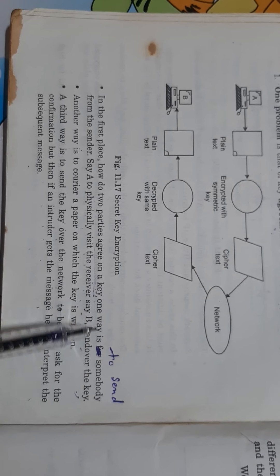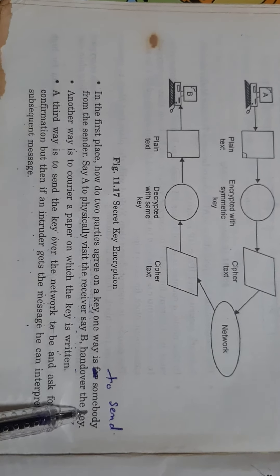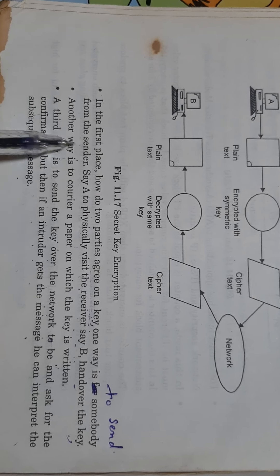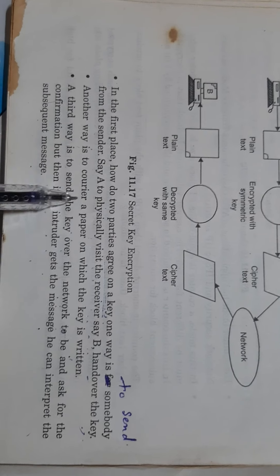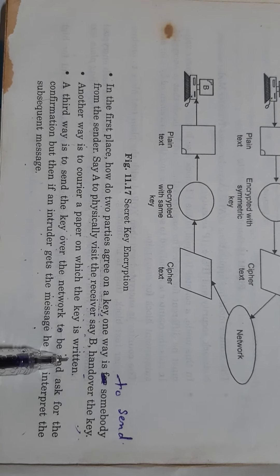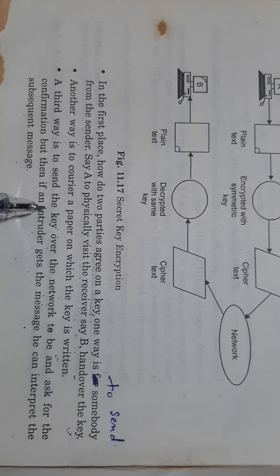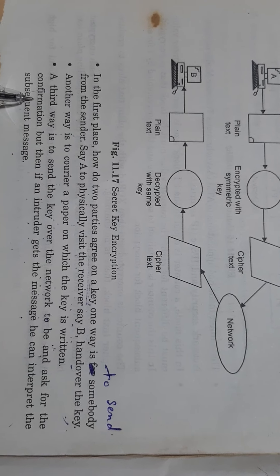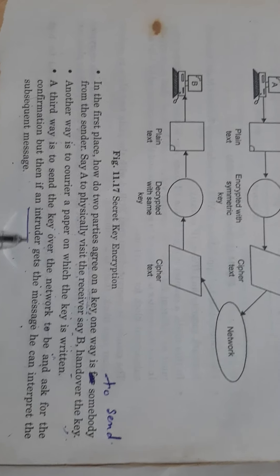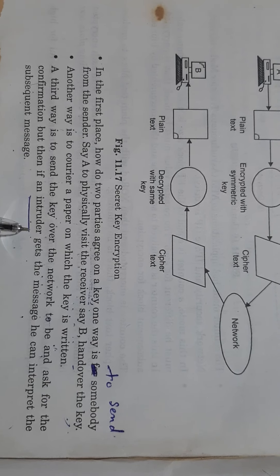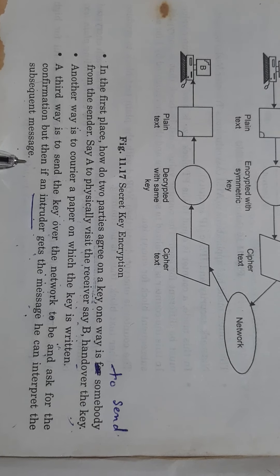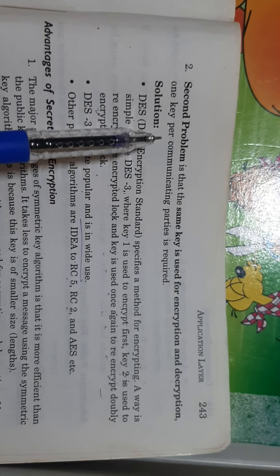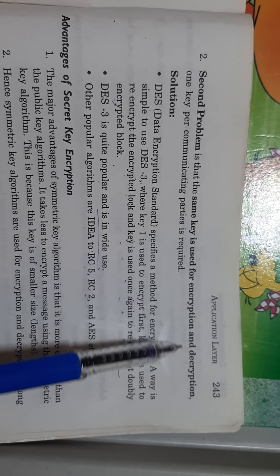Secret key encryption has a number of problems. One problem is key management and distribution. There are a number of solutions. One way is to send somebody from the sender to physically visit the receiver and hand over the key. Another way is to courier a paper on which the key is written. A third way is to send the key over the network and ask for confirmation. But if an intruder — a person who is unauthorized to access the information — gets the message, they can intercept and substitute the message.